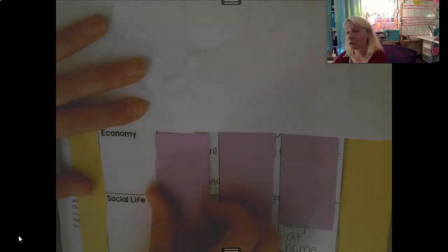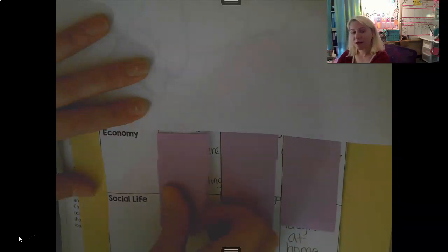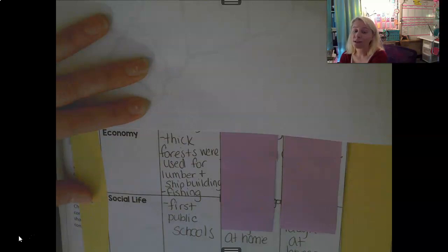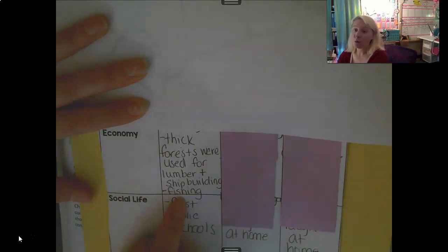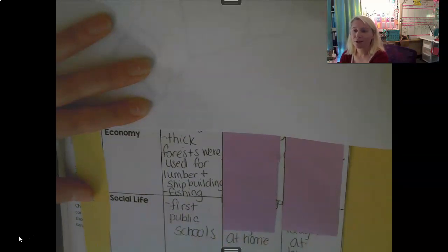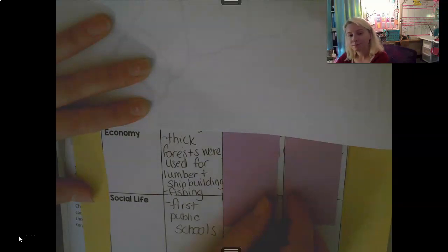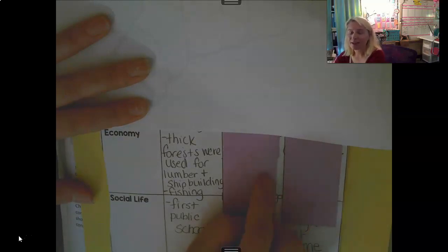Many of these things we talked about yesterday. So, economy for the New England colonies — remember, this included New Hampshire and Massachusetts. It's not surprising that they had thick forests, and those forests were used for lumber, which was then used for building ships, homes, and other materials. Fishing was the other one we put on our maps. In the middle colonies — New York and Pennsylvania — they had wheat and cows.